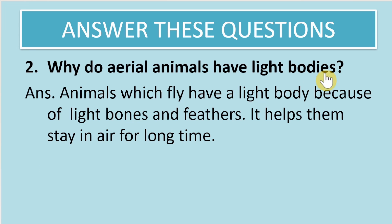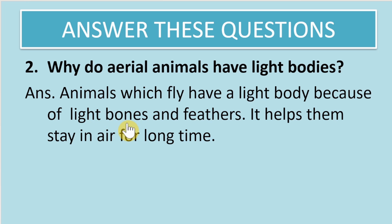Why do aerial animals have light bodies? Animals that fly have light bodies because of light bones and feathers, which help them stay in the air for a long time. They have air sacs inside their bones, which reduces the weight of the bone. They also have feathers, which are a very lightweight material — that is why aerial animals have light bodies.